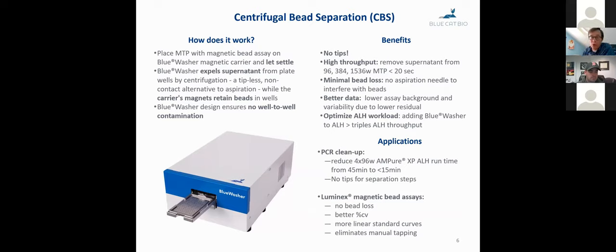So, how does it work? We call it centrifugal bead evacuation. It's pretty simple. You place your microtiter plate with your magnetic bead assay on one of our magnetic carriers. You see one of the magnetic carriers situated here on the blue washer's nest. Then you start it, and after the beads settle, the centrifugal motion expels the supernatant, and the magnetic carrier retains the beads, and all of this works with no cross-contamination. So, this works with no tips in high throughput, minimal bead loss.